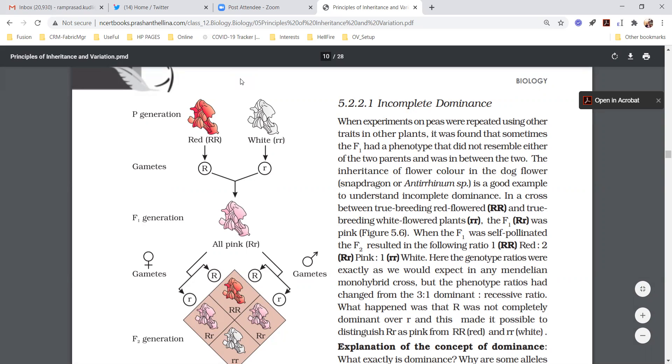Observe the parental generation. We have taken one red flower crossing with white flower. Red is totally dominant, capital R capital R. White is recessive, therefore small r. When we do crossing between red flower and white flower, in F1 generation we are expecting a new color, that is pink color.